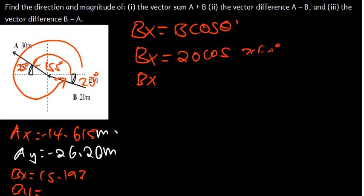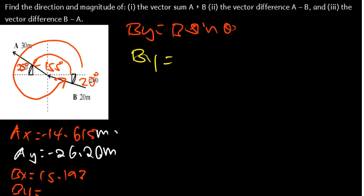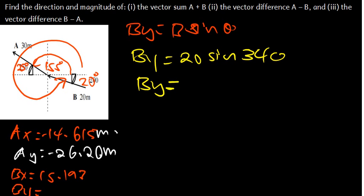Now let's find BY. BY = B·sin(θ) = 20·sin(340°). I'm getting negative 13.00. So BY is negative 13.00.